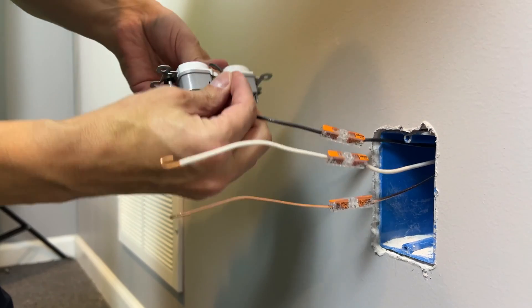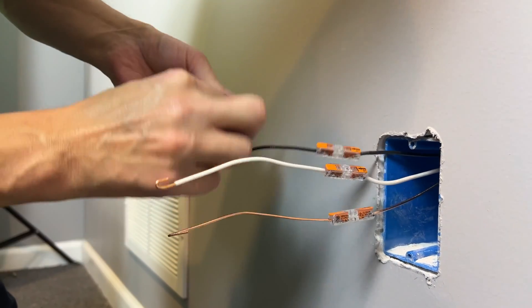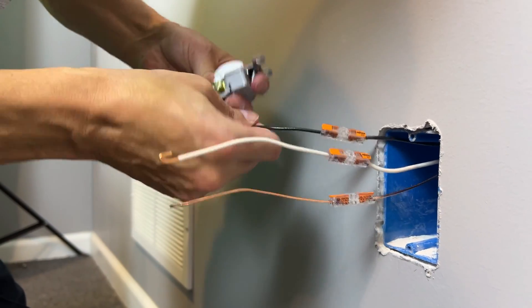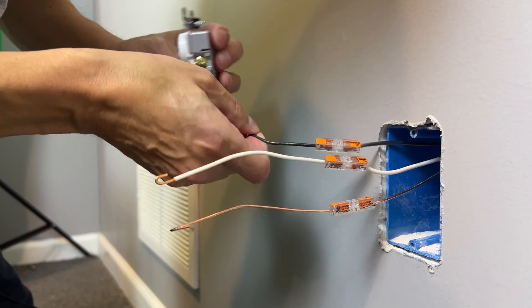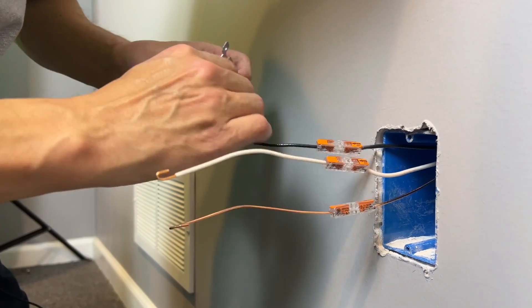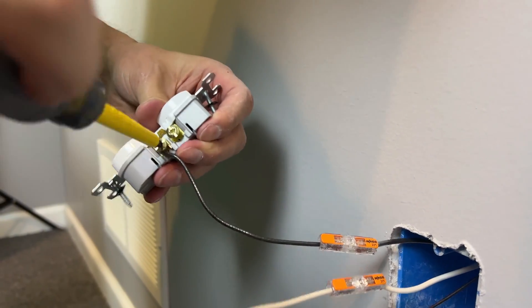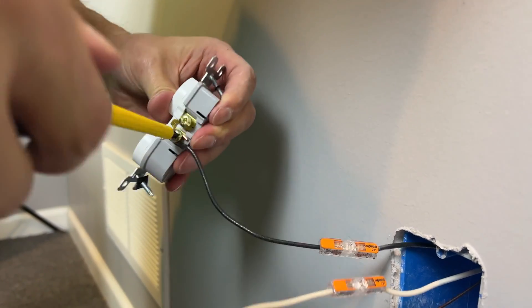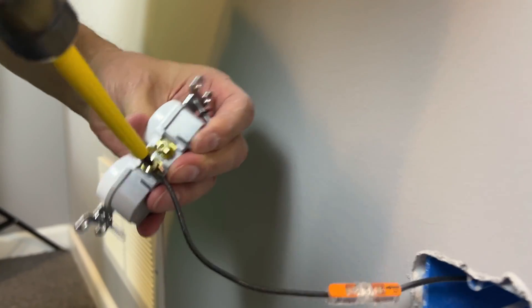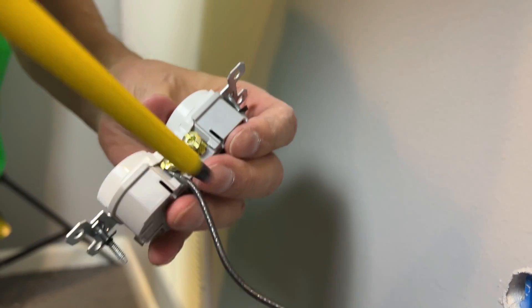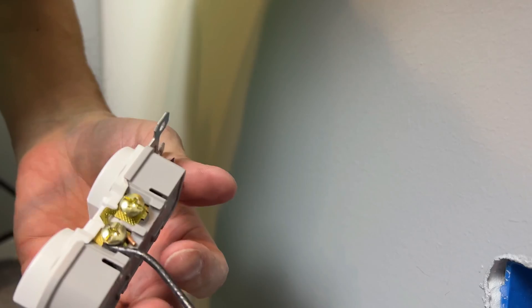So the black wire is going to go on the gold or brass colored screw. You want it to be on the underside of the screw as you're tightening it down. So on the hot side or the brass gold colored screw you want the wire coming in under the screw so as you look at it and you tighten it down clockwise it's pulling that wire in nice and tight, it will never come loose.